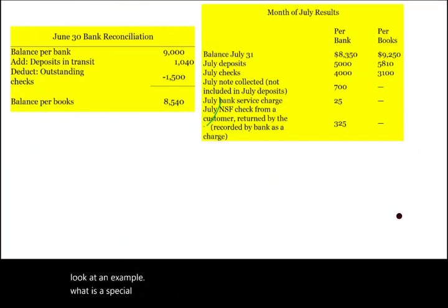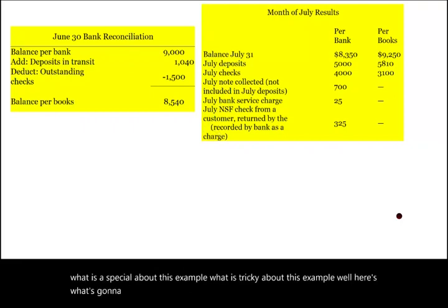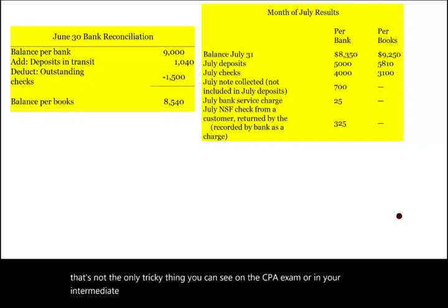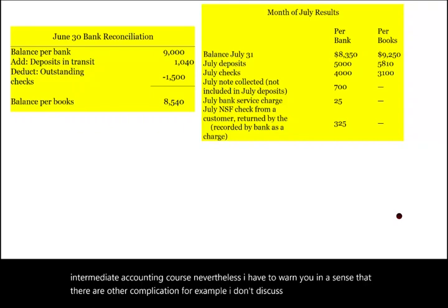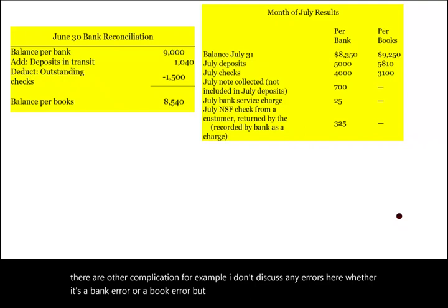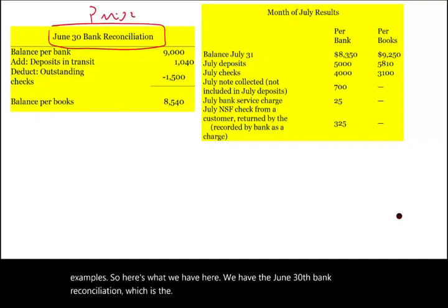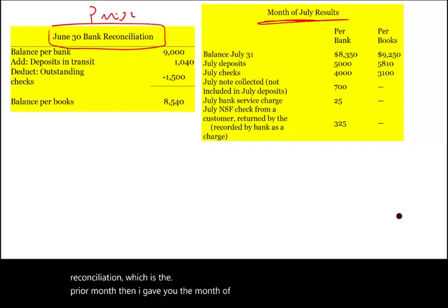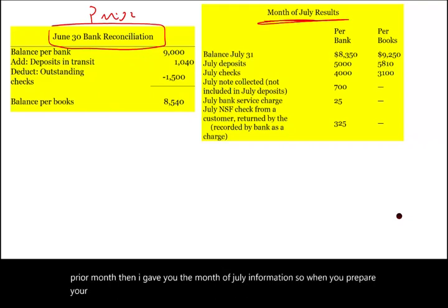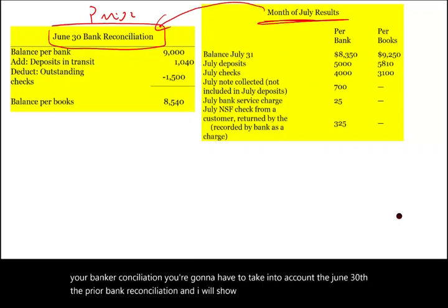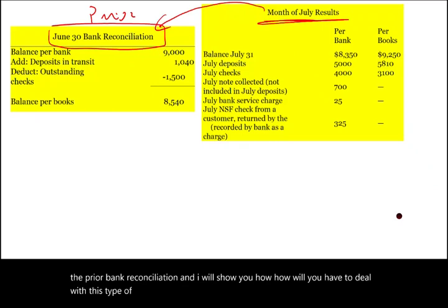What is special and tricky about this example? In this example, I'm going to tell you the tricky part — but that's not the only tricky thing you can see on the CPA exam or in your intermediate accounting course. We have the June 30th bank reconciliation, which is the prior month, and then I give you the month of July information. When you prepare your bank reconciliation, you're going to have to take into account the June 30th prior bank reconciliation, and I will show you how to deal with this type of situation.